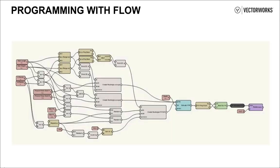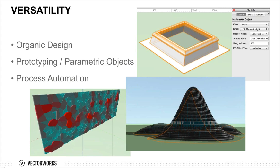Marionette employs a familiar and easy-to-use flowchart metaphor to allow you to assemble useful programs using wires to direct the flow of data and create your design. Most importantly, these programs are easy to understand and easy to modify by people who don't have a programming background. We designed Marionette to be fully integrated with Vectorworks' complete range of CAD and BIM capability, so you can create organic designs, prototype custom parametric objects, and automate other design processes. Really, your imagination is the only limit.